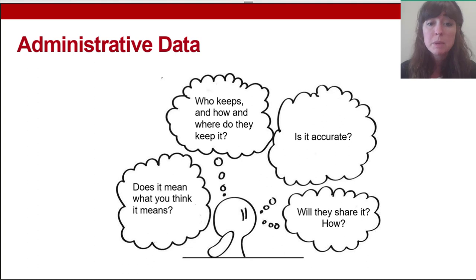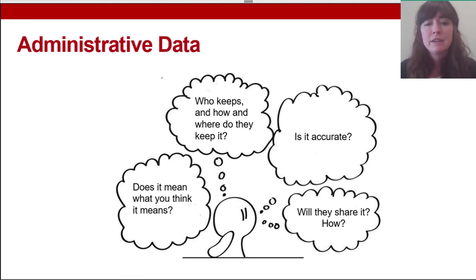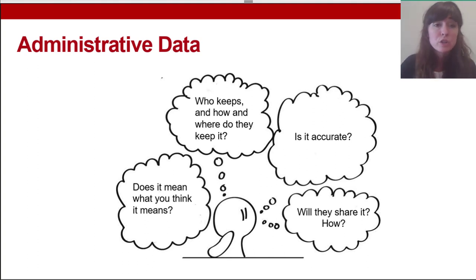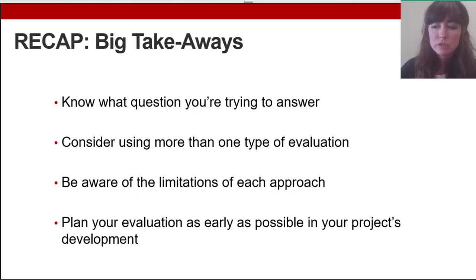Think about who's keeping the data, where they keep it, whether it's accurate, and how it's shared. If you're thinking about analyzing your own organization's data or accessing external data sets, reach out for help thinking through how to connect that data. Really think through the question you're asking — what I see often is that people are answering the association question thinking they're answering the causal question.